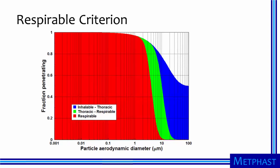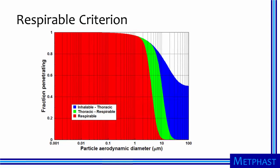Here we have the respirable criterion in red. No particles larger than 10 micrometers can reach the alveolar region because they either cannot be inhaled or they do not pass through the upper regions of the respiratory system. About half of particles four micrometers in diameter can penetrate into the deepest part of the lung, and most particles one micrometer in diameter and smaller can penetrate into the alveolar region. The blue area represents particles that can be inhaled but not reach the tracheobronchial region; the green area represents particles that pass to the tracheobronchial region but not into the alveolar region. These criteria represent the particles in the air that enters each region — in other words, they measure potential dose, not the applied dose, since many particles leave with exhaled air.